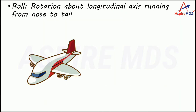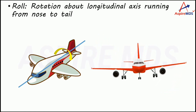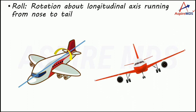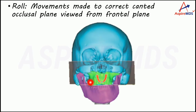The next term is roll. Roll refers to the rotation around the longitudinal axis going from front to back, causing the aircraft to rotate from side to side. To see this kind of rotation in the dentition or skull, we look from the front — the frontal view. From the frontal side, this rotation appears as the frontal plane showing whether the occlusion is canted or not.